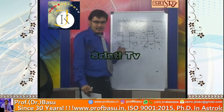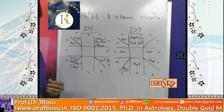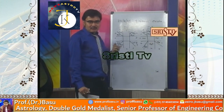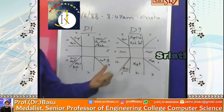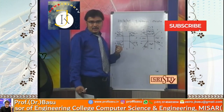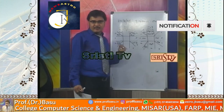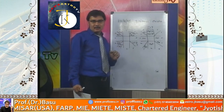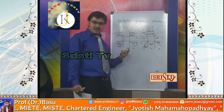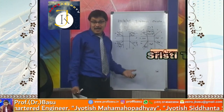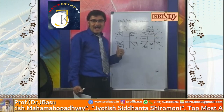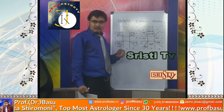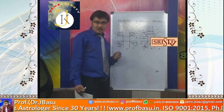Similarly, for health, we put maximum emphasis on the ascendant, ascendant lord, and the planets placed in the ascendant in D1. But apart from this, we should check the D9 to verify the strength of the planets as well as the Bhav chart. The Bhav chart gives the actual efficacy of the planet on that particular Bhav. We map the ascendant to zero degrees to get the Bhav chart, and for every aspect of life we should examine it.